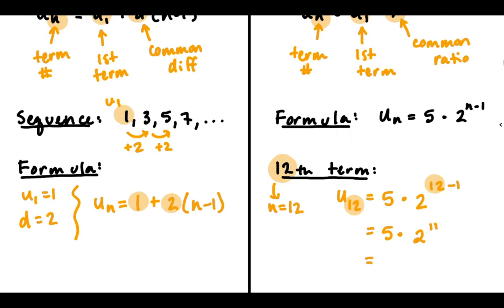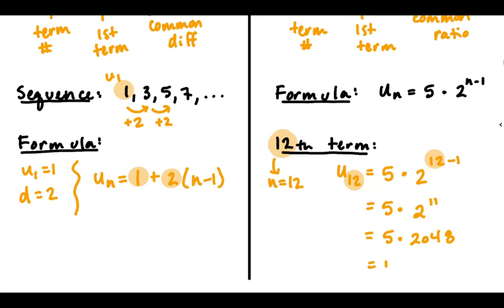Now we need to know what 2 to the 11th is. That's 2 multiplied by itself 11 times, which is 2,048. So we get 5 times 2,048. Multiply those together, we get 10,240.